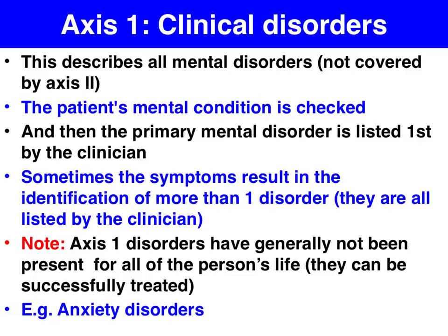We start with Axis 1: does the patient have a clinical disorder that's not covered by Axis 2? A key aspect of Axis 1 is that these disorders are generally only present for part of the person's life, not all of it.